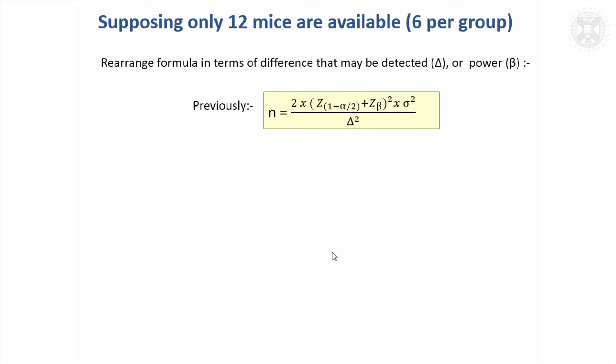But sometimes people say to me, well, I've only got this number of mice available—practicalities mean I can only do this. Then the situation's a bit different. Then it's a good idea to calculate what the study is likely to achieve with that number of animals and think about whether it's a valid study.